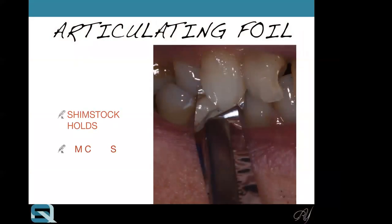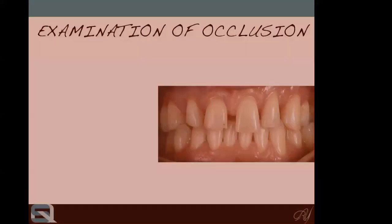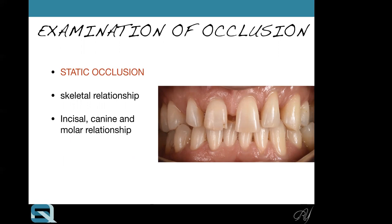Shimstock foil is very accurate at eight microns, and we use this when we want to be as precise as possible. When assessing occlusion, we check swallowing and chewing occlusion, and make sure there are no interfering teeth — working side and non-working side contacts. For my static occlusion assessment, I always do a skeletal relationship assessment, incisal, canine, and molar relationship, OVD measurement, overjet and overbite measurement. These are my records at the start, so that if I want to stay the same, my measurements shouldn't change; but if I want to increase the OVD, I know how much I'm increasing.